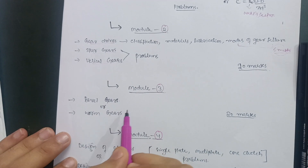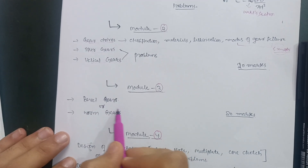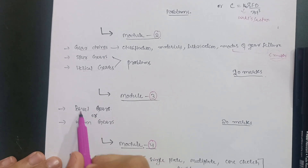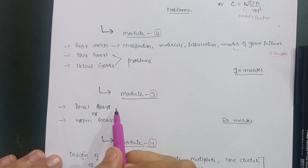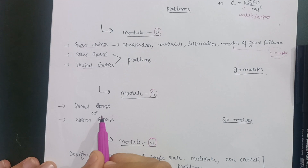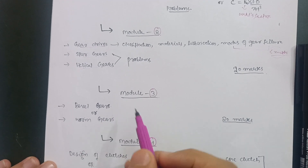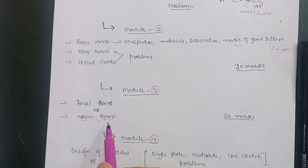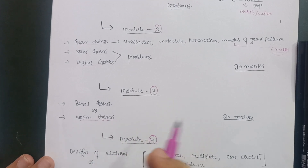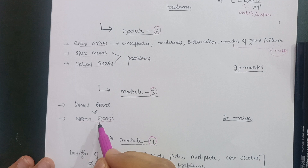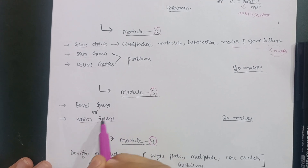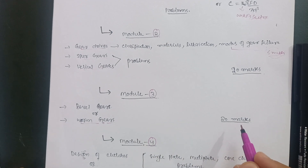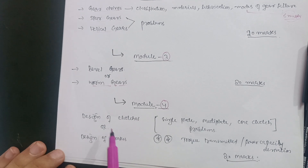Module 3 has two types: bevel gears and worm gears. Based on previous papers, bevel gear problems of 20 marks or 14 marks have frequently appeared. I prefer you go for worm gears as the design procedure is easier, and they will definitely ask a 10 or 20 mark question on worm gears. However, prepare the full module — both bevel gears and worm gears — as there are chances of questions from both parts.